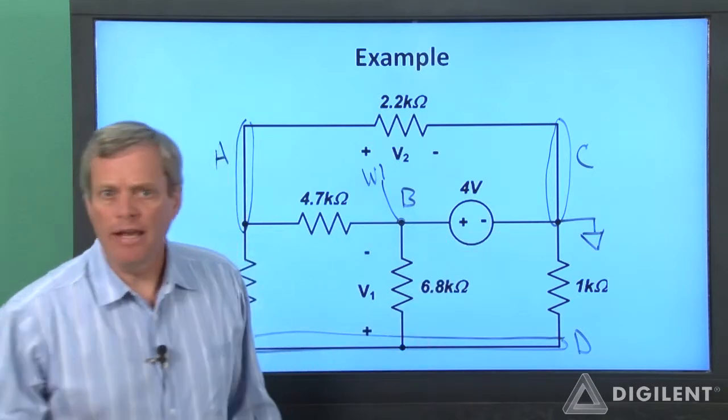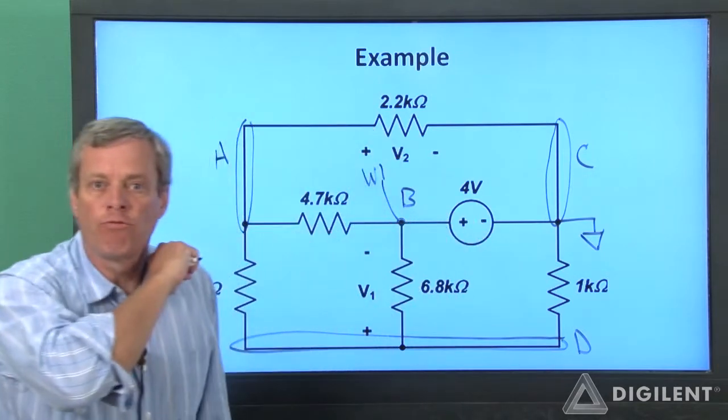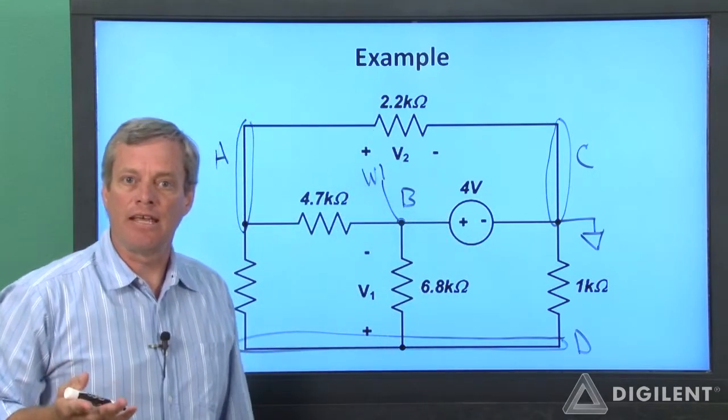If I wanted, I could swap these two. I could put ground here, channel 1 here, and then set this to negative 4 volts. It should be exactly the same thing.